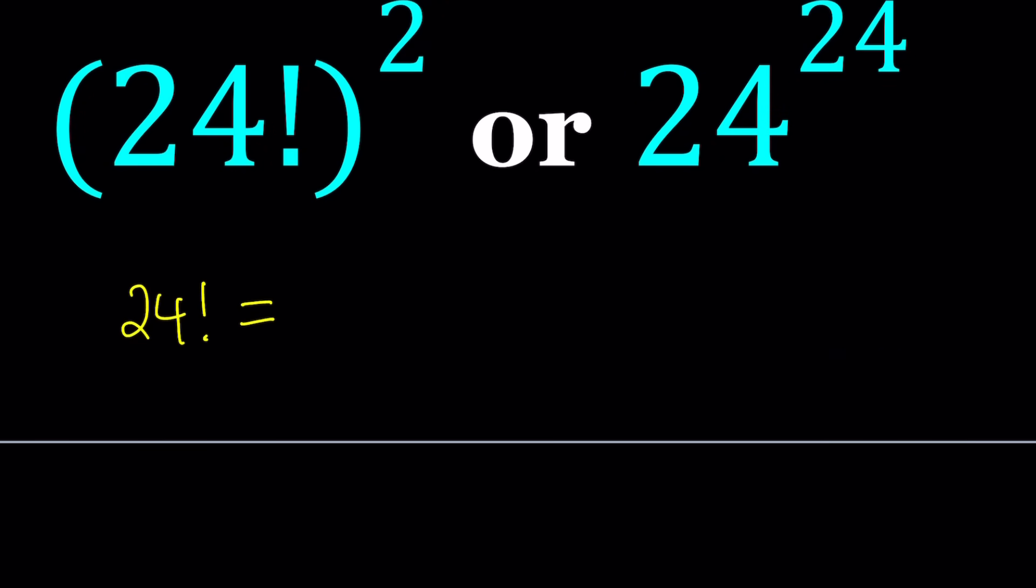By definition, 24 factorial is the product of 24 consecutive integers, the largest one being 24, the smallest one being 1. You can think of it as a product of 24 times 23 dot dot dot all the way down to 3, 2, 1.